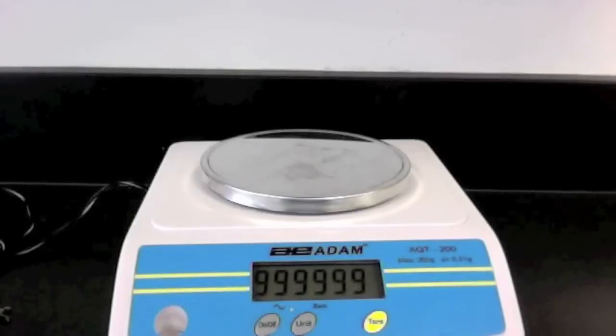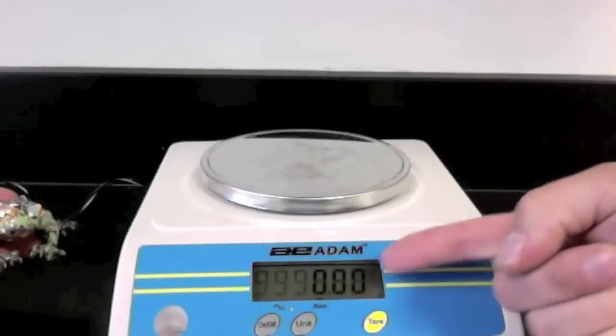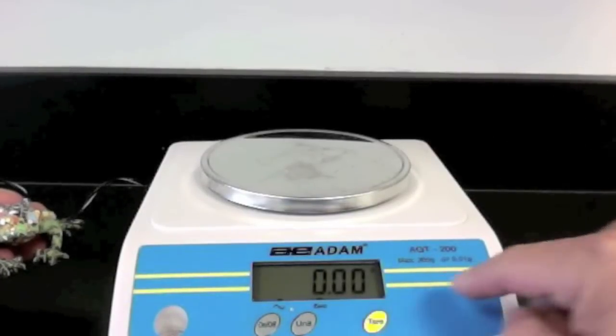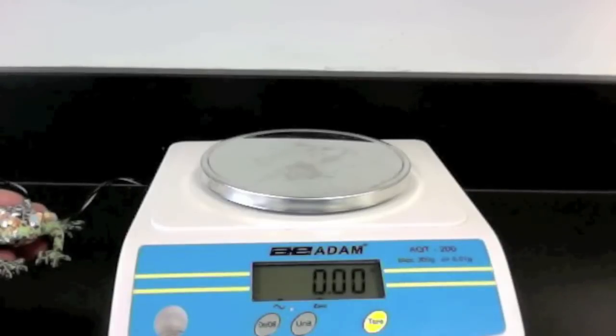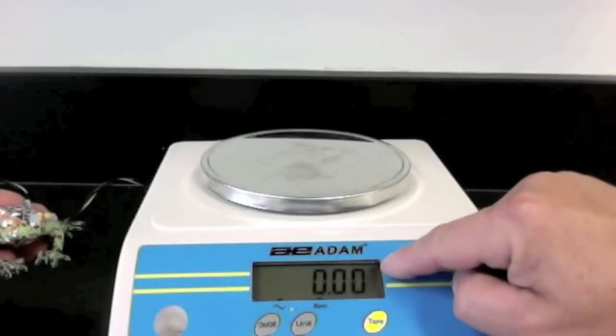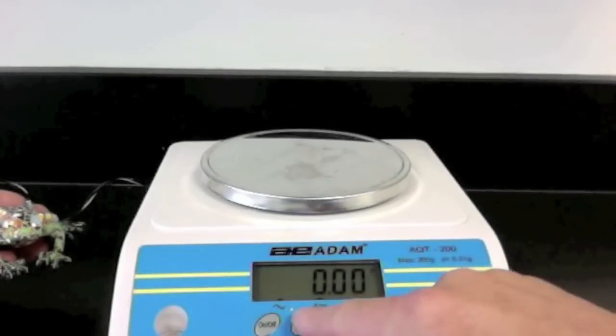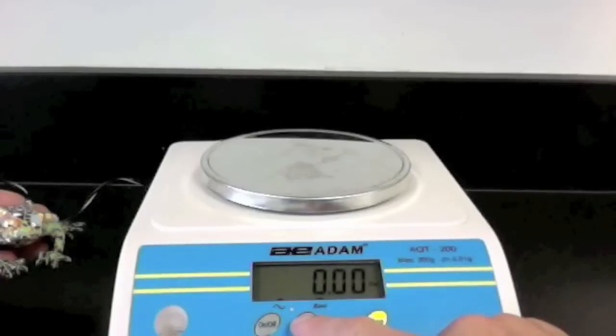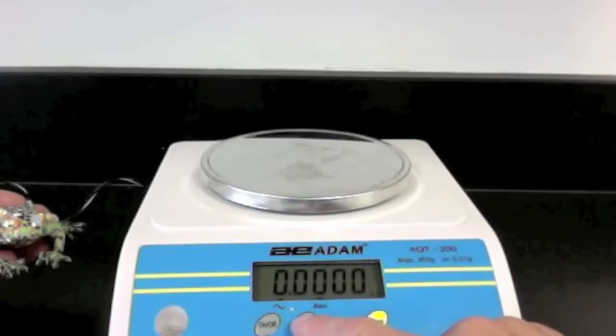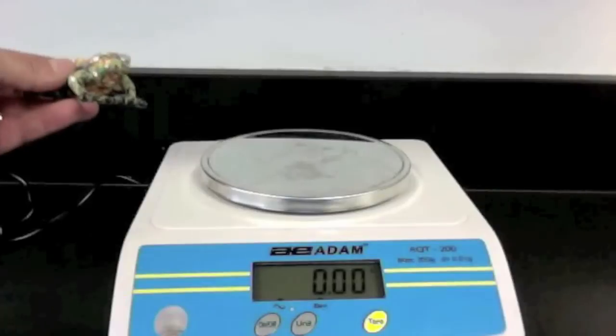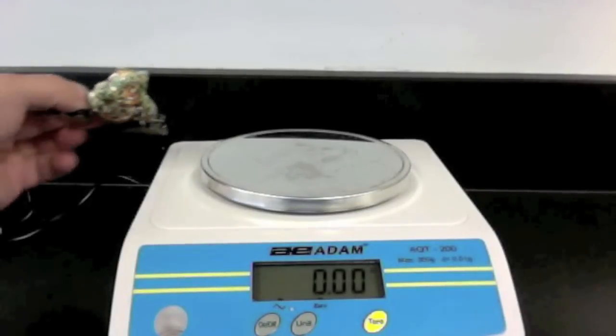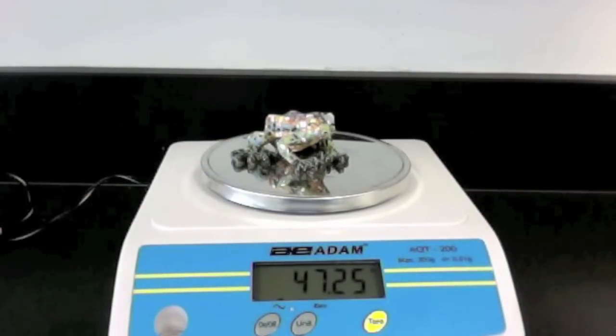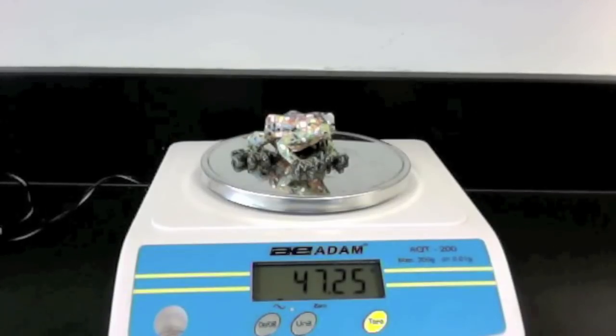Once the scale is on, it is important not to place the object onto it until the numbers have read zero. If the numbers are not reading zero, you can press the tare key to make it go back to zero. It's also important to make sure that the scale is labeled in grams. If it is not, the unit key can be used to change to the correct unit that is necessary. When the scale reads zero and is labeled in grams, it is okay to put the object on the scale. This scale reads 47.25 grams.